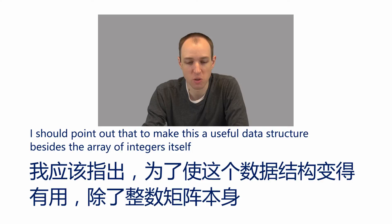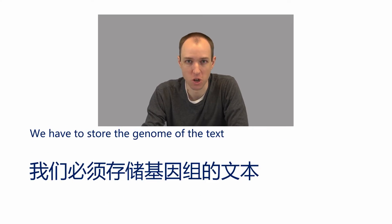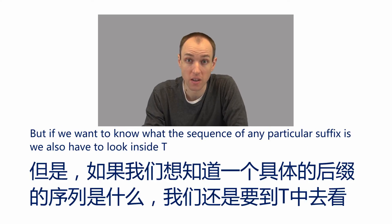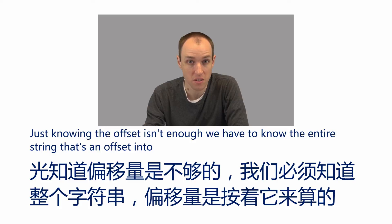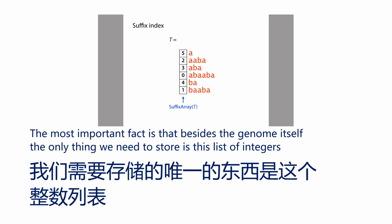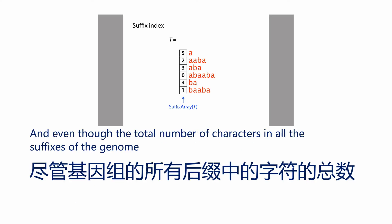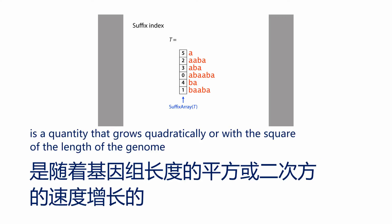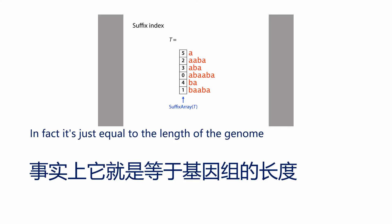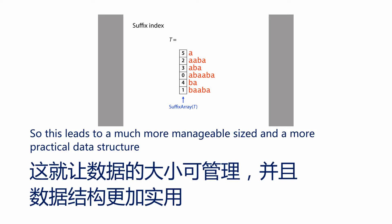To make the suffix array a useful data structure, besides the array of integers itself, we also have to store the genome or the text itself. We need to keep the genome around because, while the list tells us the alphabetical order of the suffixes, if we want to know the sequence of any particular suffix, we have to look inside the text. The most important fact is that besides the genome itself, the only thing we need to store is this list of integers. Even though the total number of characters in all the suffixes grows quadratically, the number of integers in the suffix array grows only linearly — it's just equal to the length of the genome — leading to a much more manageable and practical data structure.